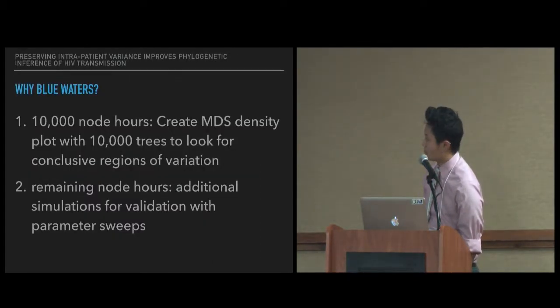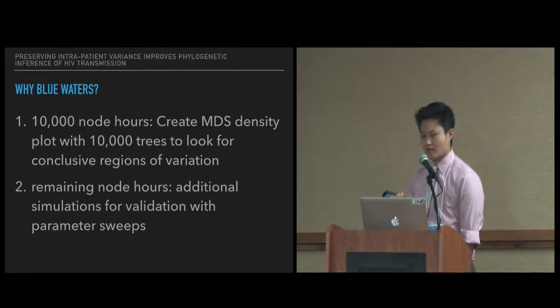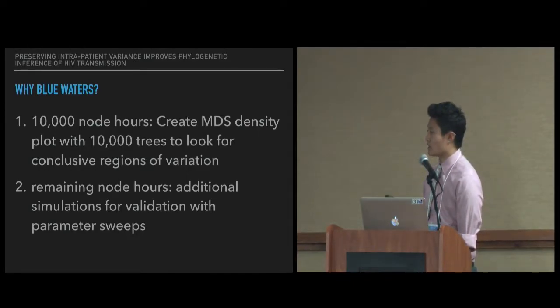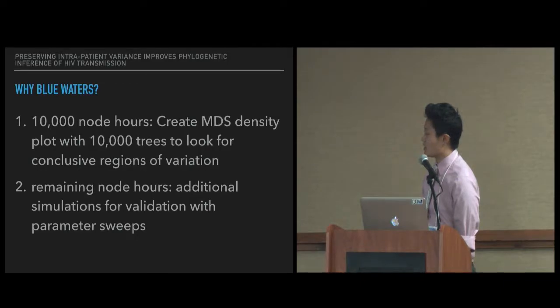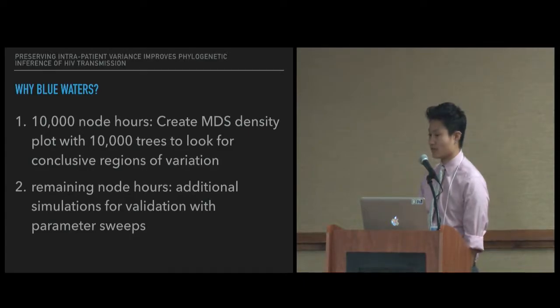So why blue waters? With that MDS plot we made earlier, that was 100 samples. We want to do an MDS density plot with 10,000 trees to look for conclusive regions of variation. And so this will actually take about 10,000 node hours. And so with the remaining allocation, I also want to do much more than 10 simulations. I want to do additional simulations for validation with parameter sweeps.